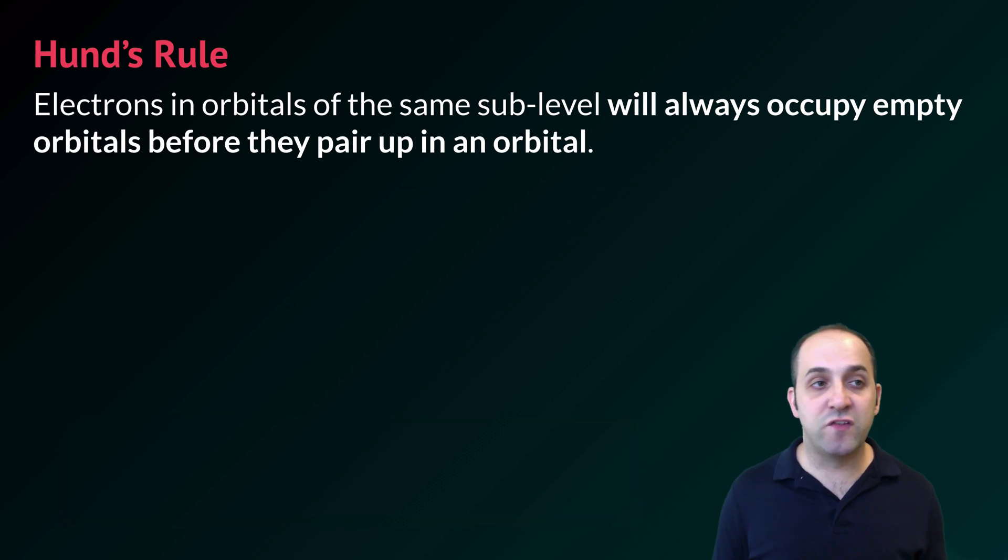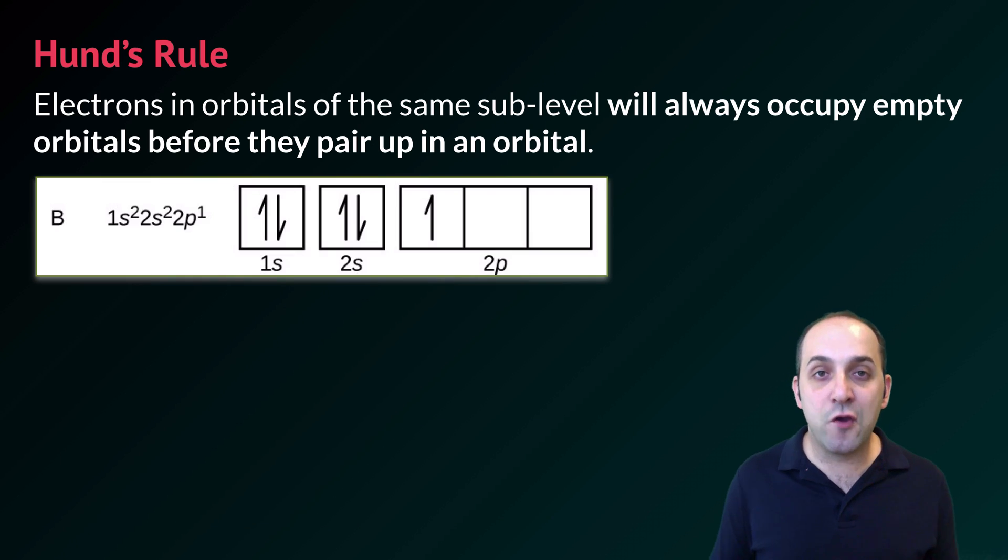The other rule that we need to be conscious of is Hund's rule, which states that electrons in orbitals of the same sublevel will always occupy empty orbitals before they pair up in an orbital together. We can see that if we continue to look at box diagrams for successive elements.